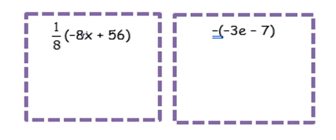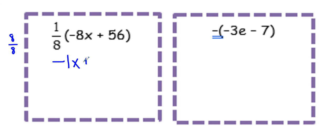1 eighth times a negative 8x — so we have a positive times a negative, so it's a negative. And remember, 1 eighth times 8 is 8 over 8, which is 1. So we write 1 there and then x. Then we have 1 eighth times a positive 56, so it's a positive 56 divided by 8, which equals 7. A better way to write that is, instead of negative 1x, we would just write negative x plus 7.